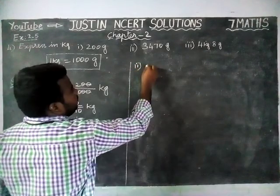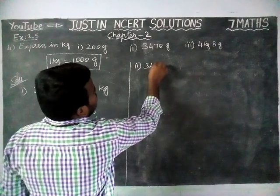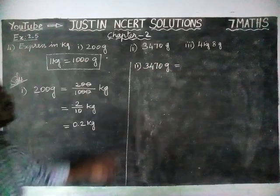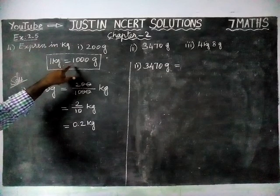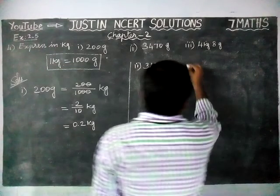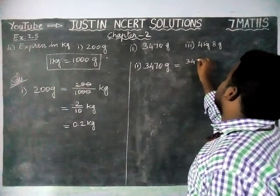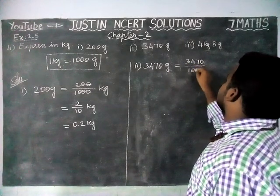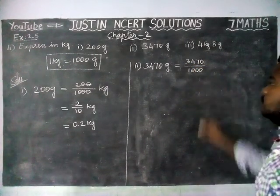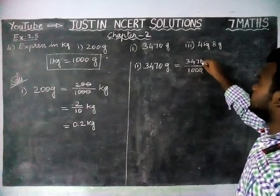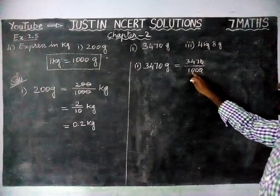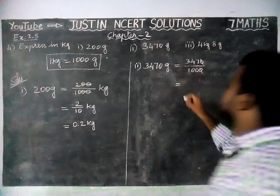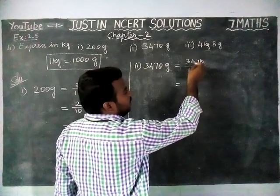Second question: 3470 grams is equal to — we have to convert into kilograms, so we are going to divide it by 1000. 3470 divided by 1000. The 10 is cancelled, and remaining 3.470 grams — we have to make 2 decimal points.